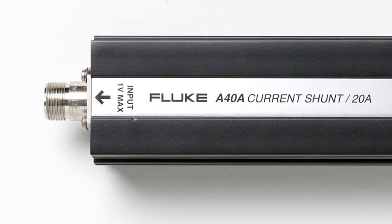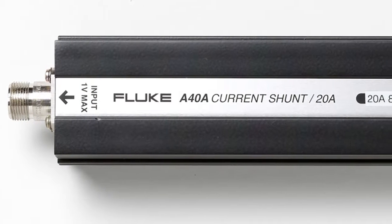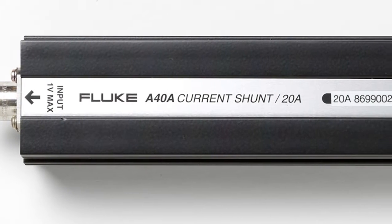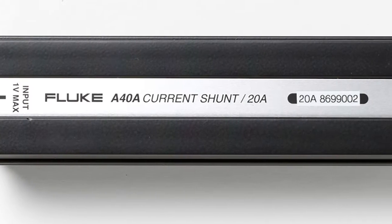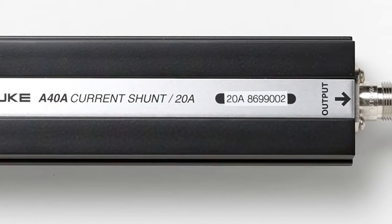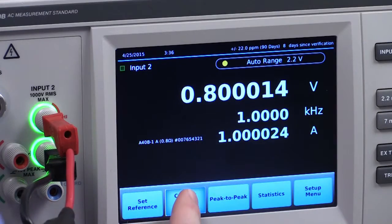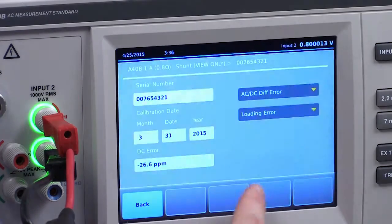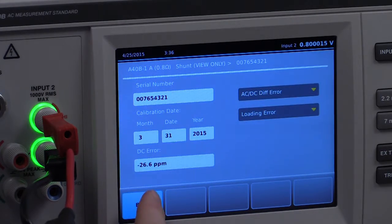Fluke A40 and A40A shunts can be used for relative current measurements. The 5790B can also use custom shunts that have been calibrated as a system along with the 5790B. The 5790B stores all shunt properties and coefficients which are used to calculate the current measurement.